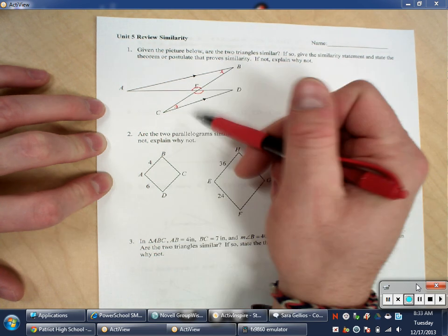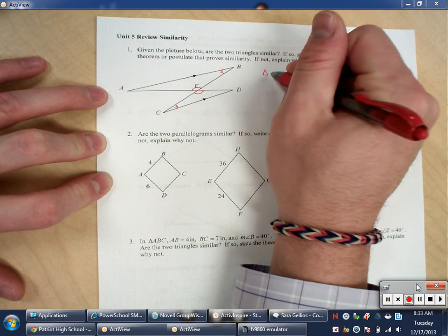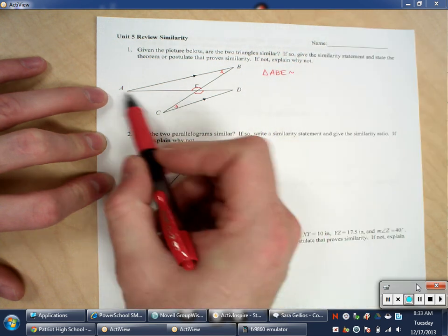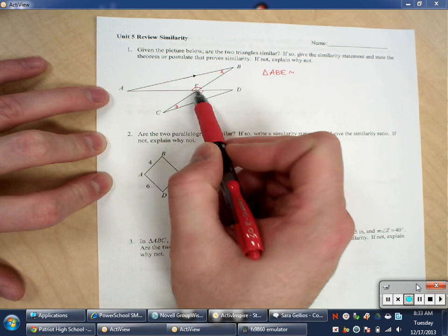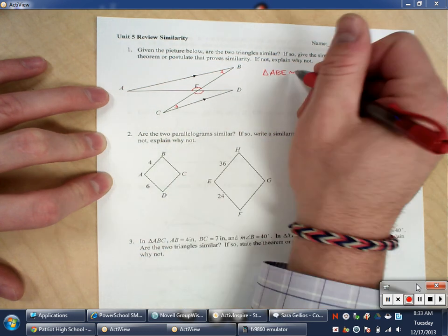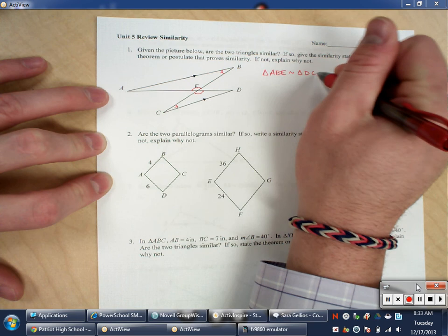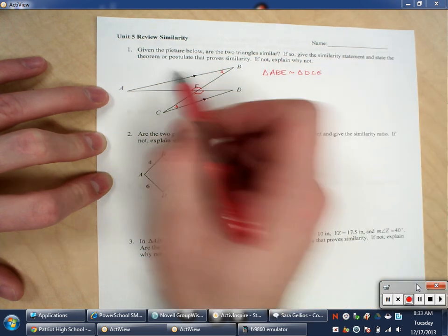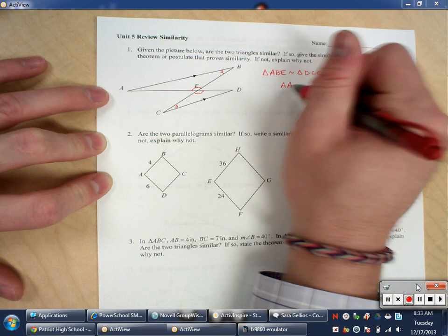And once I have those two, that's enough for me to say that triangle ABE is similar. And if I go from A to B to E, then I have to go from D to C to E because I have to use the corresponding parts. So there's my two triangles similar. It asks me for the theorem or postulate that proves it, and that is angle-angle.